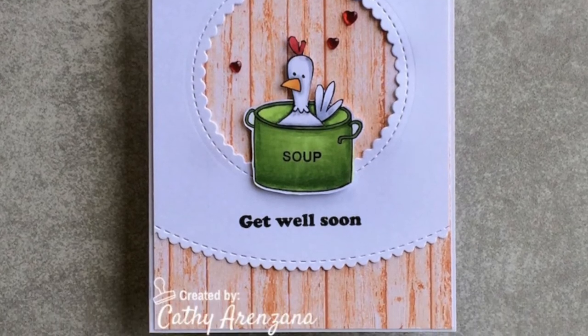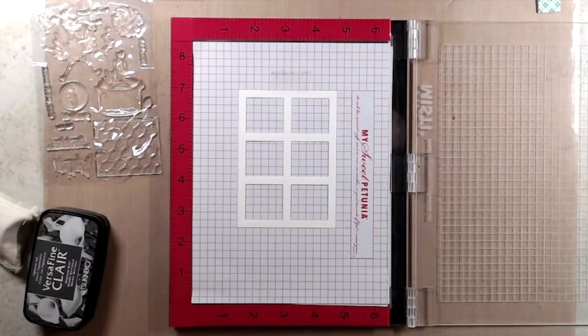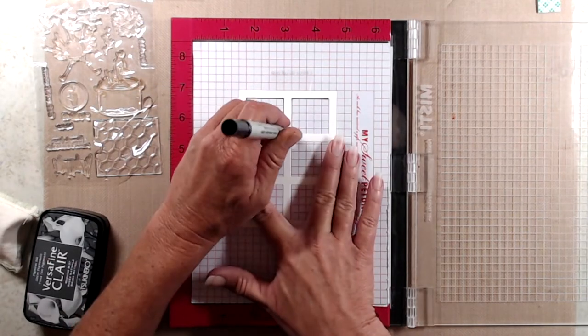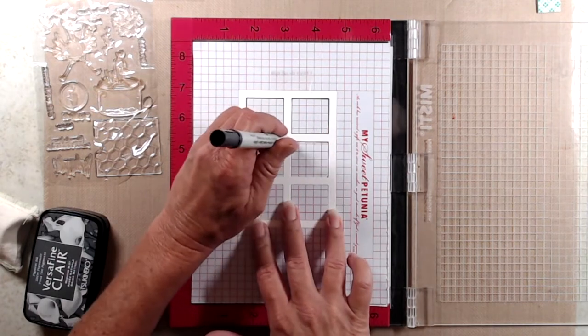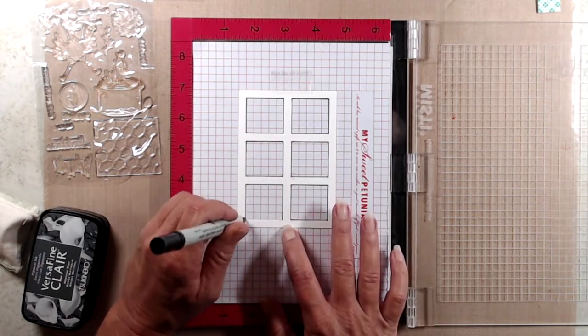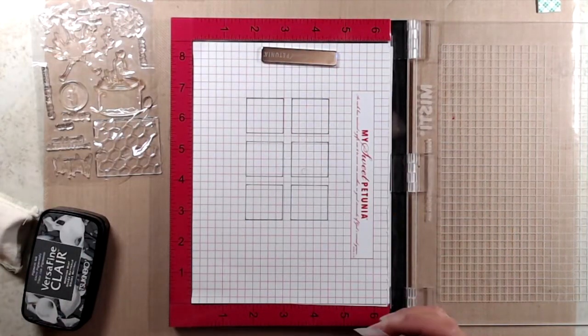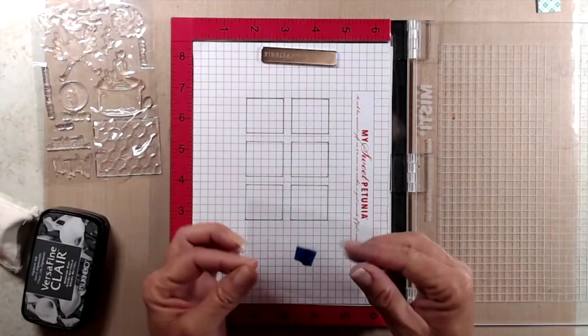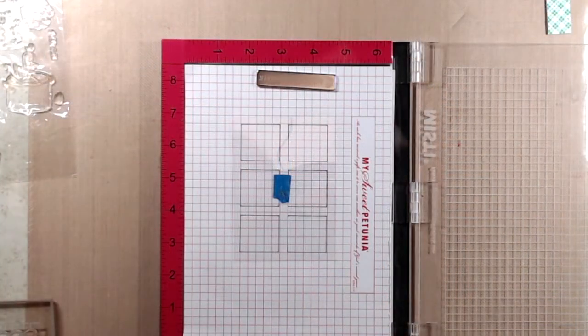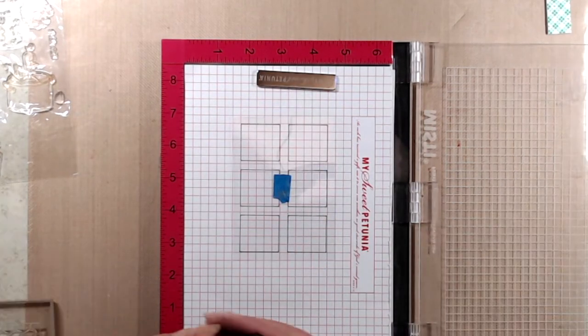Moving on to the third card I wanted to have a lot of dimension and kind of like an actual chicken coop look to it. So I used a frame die from Hello Bluebird and cut it out from white cardstock and from a piece of the wood grain cardstock. I placed it in my Misti and taped it down. I traced inside the squares because I wanted to stamp on a piece of acetate. I was watching a video from my friend Renee over at Delaney Jane Cards and she reminded me that I had embossable acetate in my stash and I thought that would be perfect for this particular card.